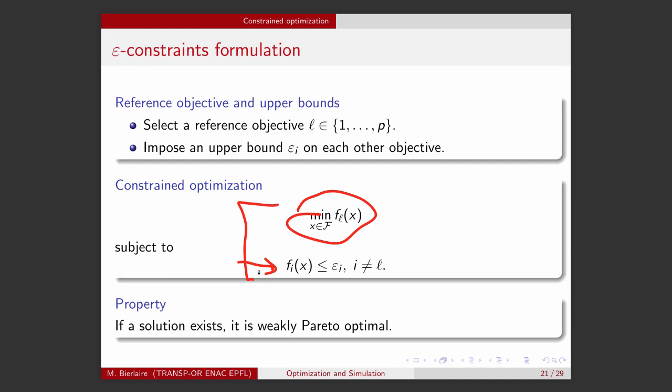And it can be shown that if a solution of this exists, it will be weakly Pareto optimal, which is very useful. It's also interesting because the epsilon usually have an engineering interpretation.